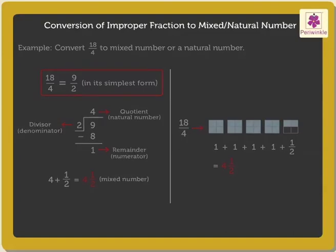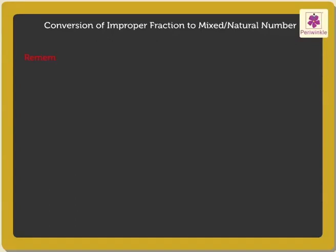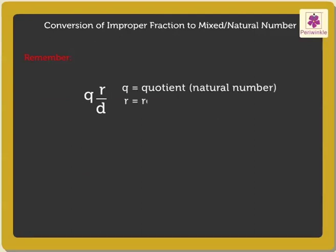Kids, remember: Q stands for quotient, which is the natural number. R stands for remainder, which is the numerator. D stands for divisor, which is the denominator.